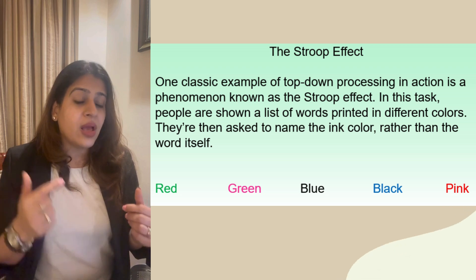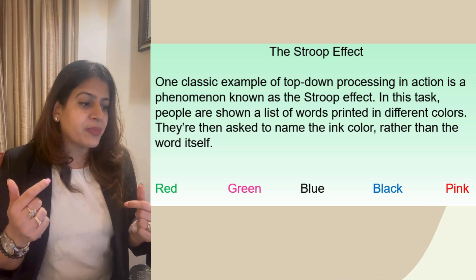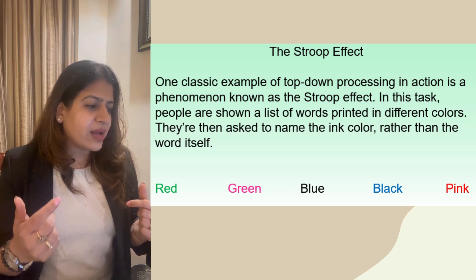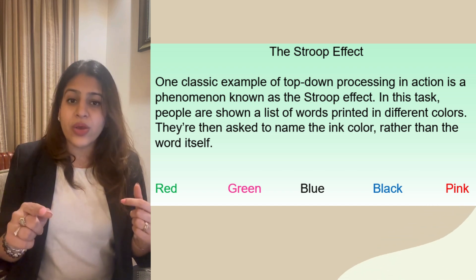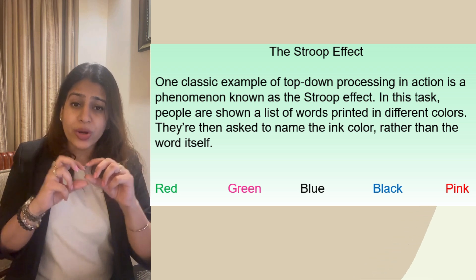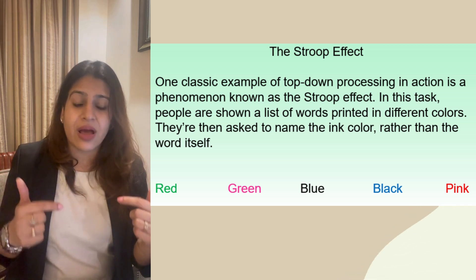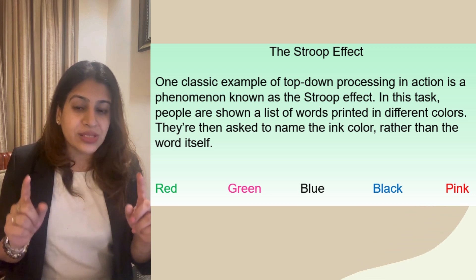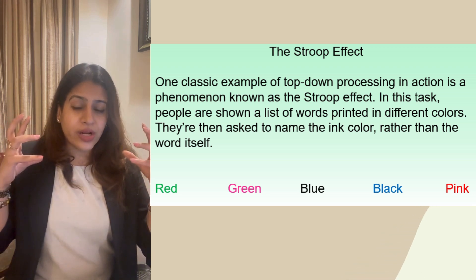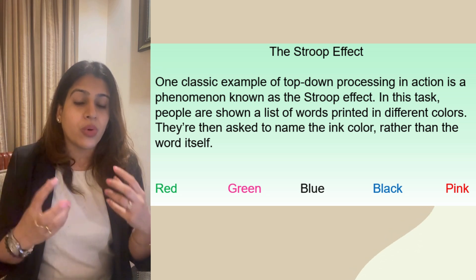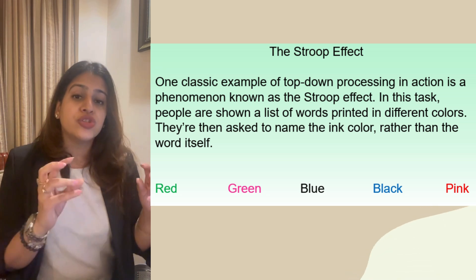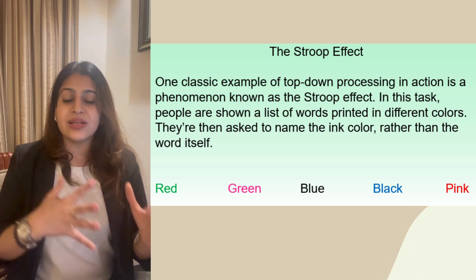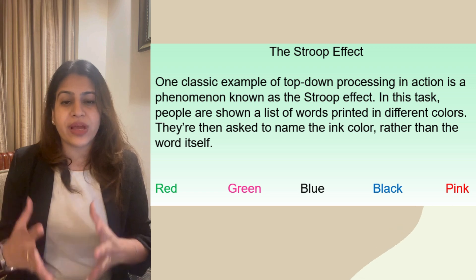But if I tell you to speak out the colors of the words again and instead you make a mistake and read out the words themselves rather than the colors, that is top-down processing. You are not using your senses — according to your schema, your brain defaults to reading the word, so you read the word rather than seeing the color. This is top-down processing in the Stroop Effect.